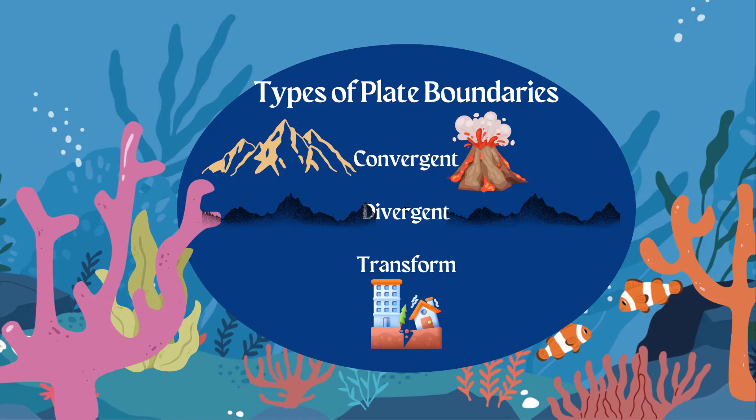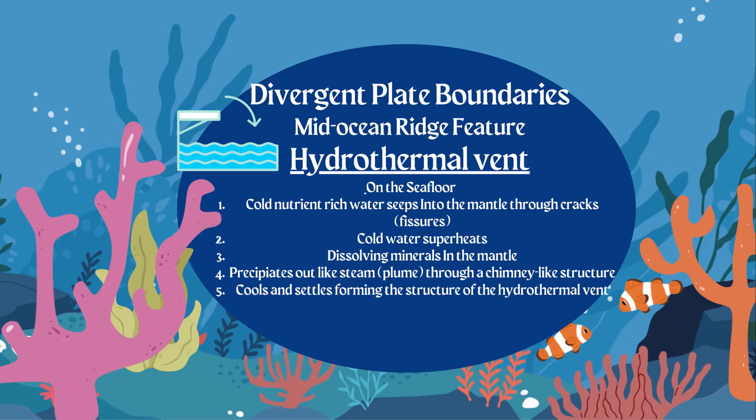Transform boundaries typically cause earthquakes. When two plates move in anti-parallel or opposite directions, they get stuck on one another — it's not a perfect fit. That builds up pressure as they push against each other, and once that pressure is released, the plates break away and move in opposite directions, causing an earthquake.